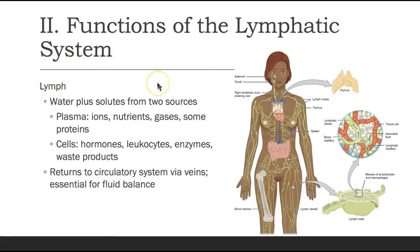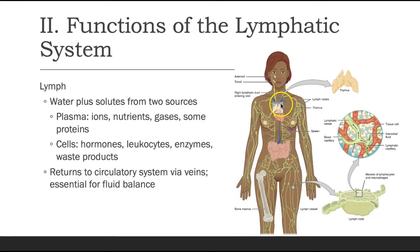Lymph is made up of water plus solutes from two sources: from our plasma, which came from our capillaries and contains ions, nutrients, gases, and some proteins; and also cells such as hormones, leukocytes, enzymes, and waste products. This fluid flows through the entire lymphatic system and eventually returns through two ducts — the thoracic duct, which drains to the left side of our veins, and the right lymphatic duct, which drains to the right side. This is essential for maintaining fluid balance in the body.